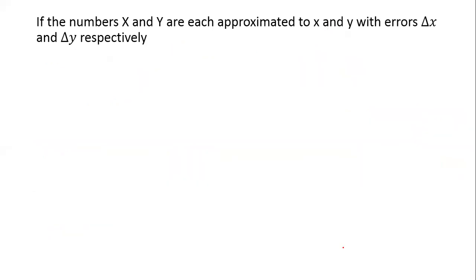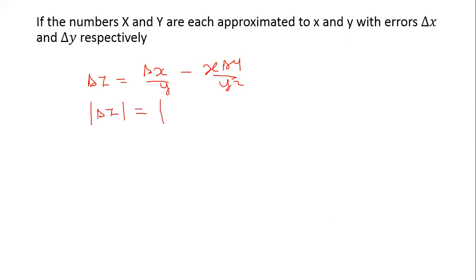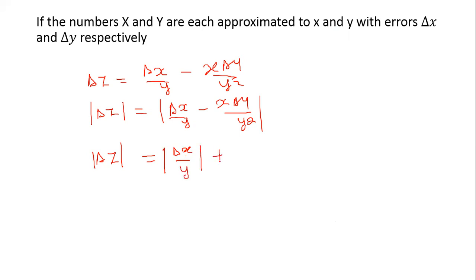Moving to the next page: we had delta z equal to delta x over y minus x·delta y over y squared. We now introduce the magnitude, so the absolute error is: |delta z| equals |delta x over y| plus |x·delta y over y squared|. This is the formula for absolute error in division.